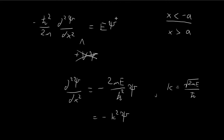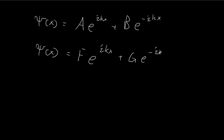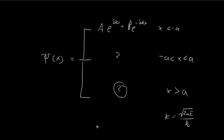The same form of equation also applies for the region where x is larger than a. For that region we get a similar ψ of x, this time with different constants. Let's call them F and G: ψ = Fe^(ikx) + Ge^(-ikx), and this expression applies for the region where x is larger than a.